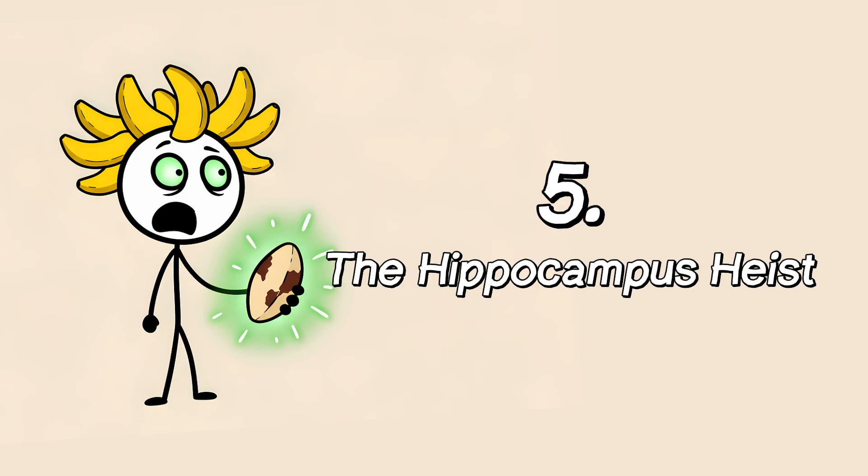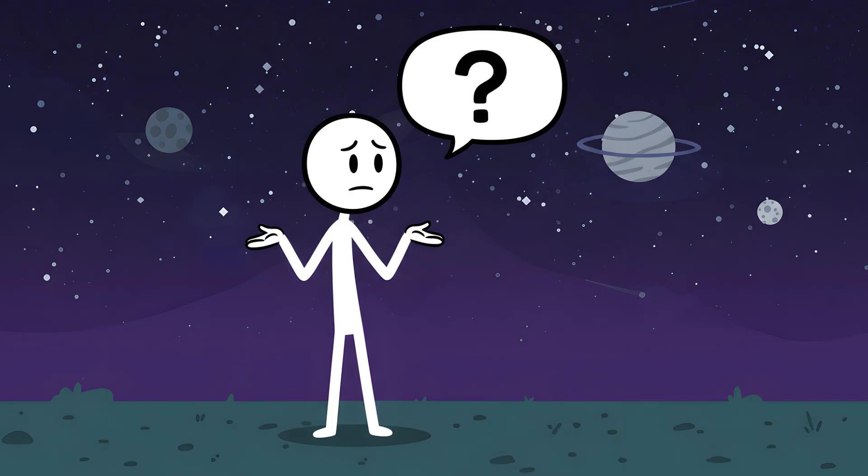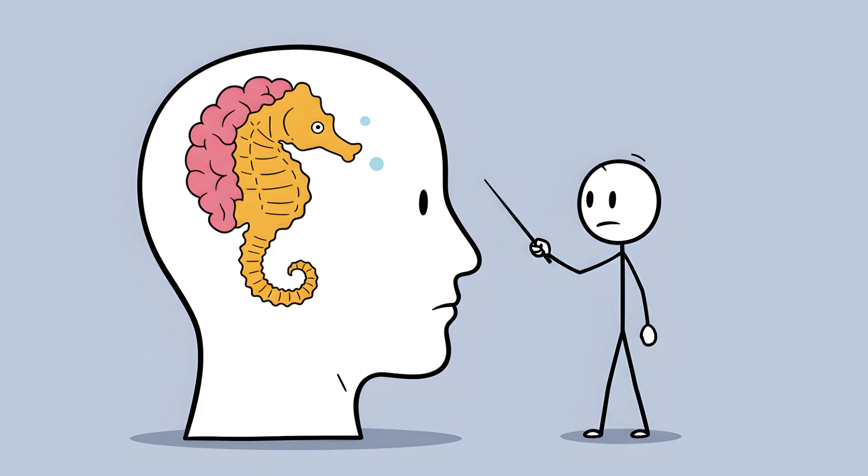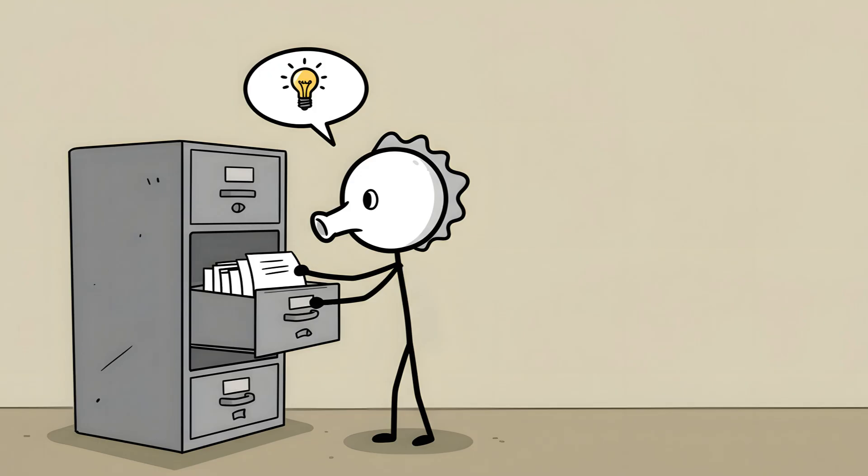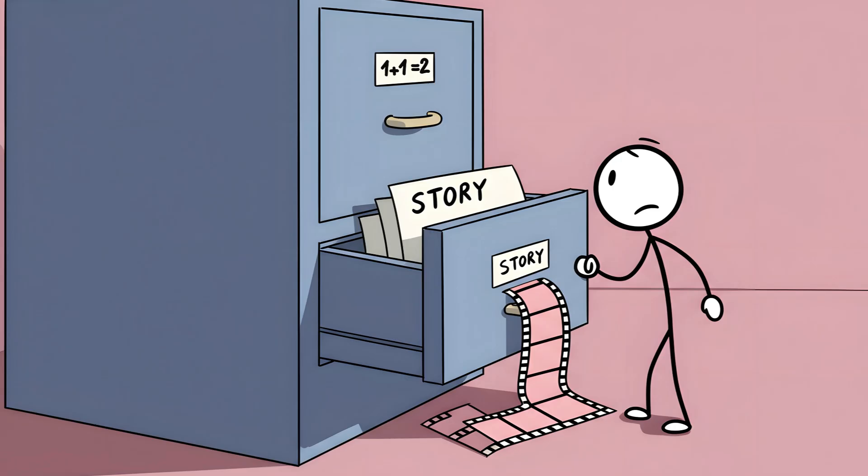Number five. The hippocampus heist. So, where does the memory go? Is it deleted forever, sent into the cosmic void? Not exactly. To understand this, we have to talk about the seahorse-shaped part of your brain called the hippocampus. The hippocampus is your brain's overworked, underappreciated librarian. Its job is to take your experiences, your working memories, and file them away as long-term, episodic memories. It doesn't just store facts. It stores stories.